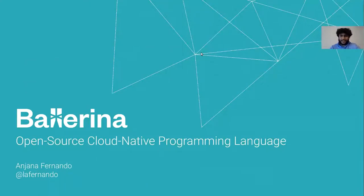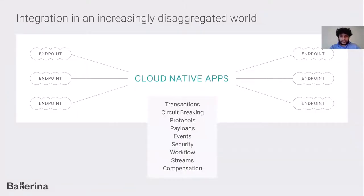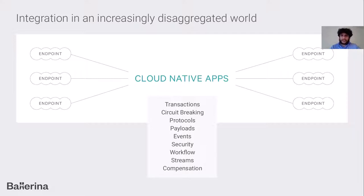Hi everyone, welcome to this session on Ballerina, an open source cloud native programming language. We have seen cloud native technologies being used to create scalable applications. We generally use them as a set of tools, libraries, and frameworks on top of existing programming languages to make them cloud native ready — used to write microservices and retrofit these features. What we have tried to do with Ballerina is to create a programming language from the ground up with these concepts of cloud nativeness built into the language itself.